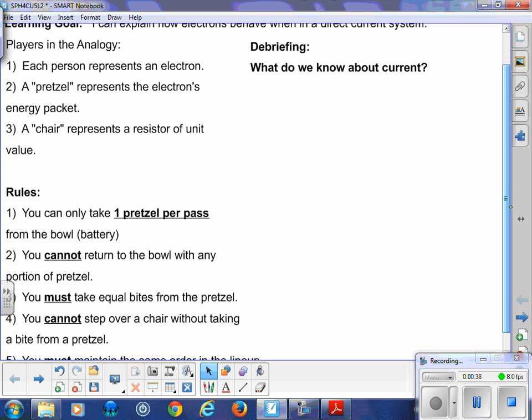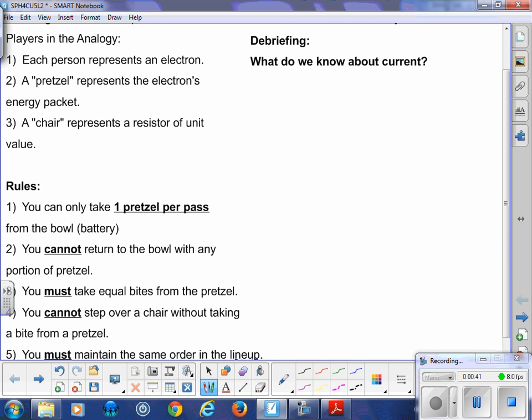What I want to do is look at the debriefing. What do we know about current now? I'll give you past answers from what people have found from the analogy. People concluded that electrons maintain their order, which is kind of true, though it's tough for us to actually identify but it does make sense. So electrons maintain their order in the circuit. It's true for the analogy, whether it's completely accurate is perhaps not completely true, but for now it's a conclusion that was drawn.